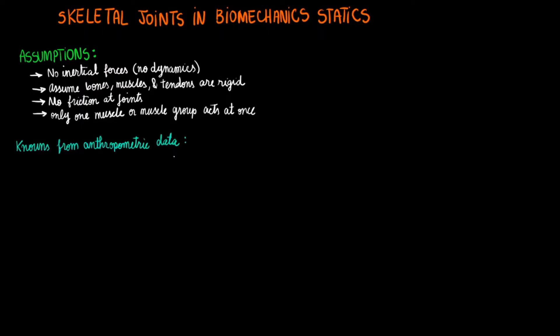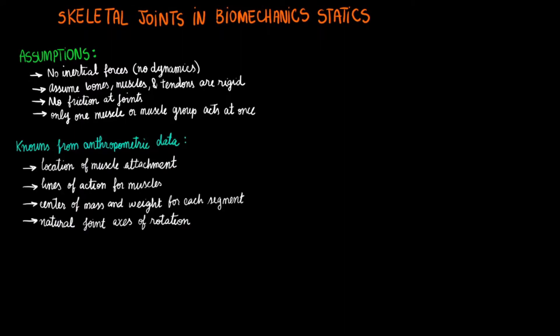Some measurements that we will need before solving our problems include: first, the location where different muscles attach to bones; second, the line of action of different muscles; third, the center of mass and different weights of segments; and fourth, the natural axes of rotation for different joints.